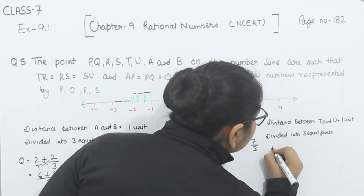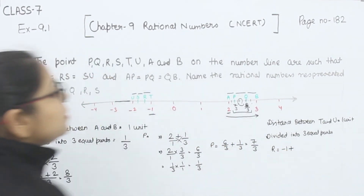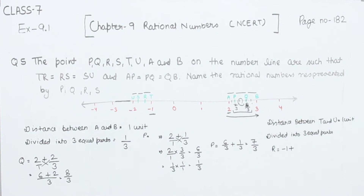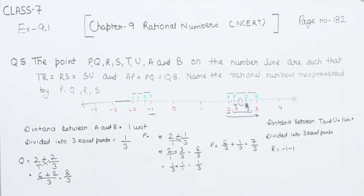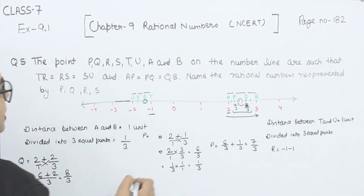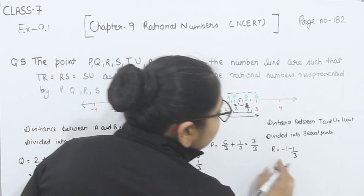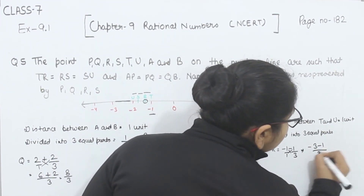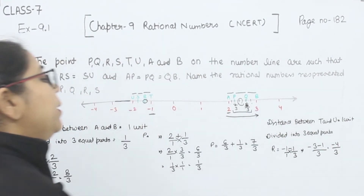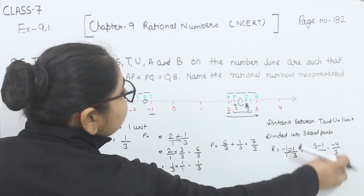So first of all we have to find the value of R. We are at the point minus 1. Now coming from minus 1 to minus 2, we are going in the negative direction, so we are going to subtract. So minus 1 minus 1/3. Multiplying: this gives minus 3 minus 1 over 3, which is minus 4/3. The sign remains negative. So the value of R is minus 4/3.